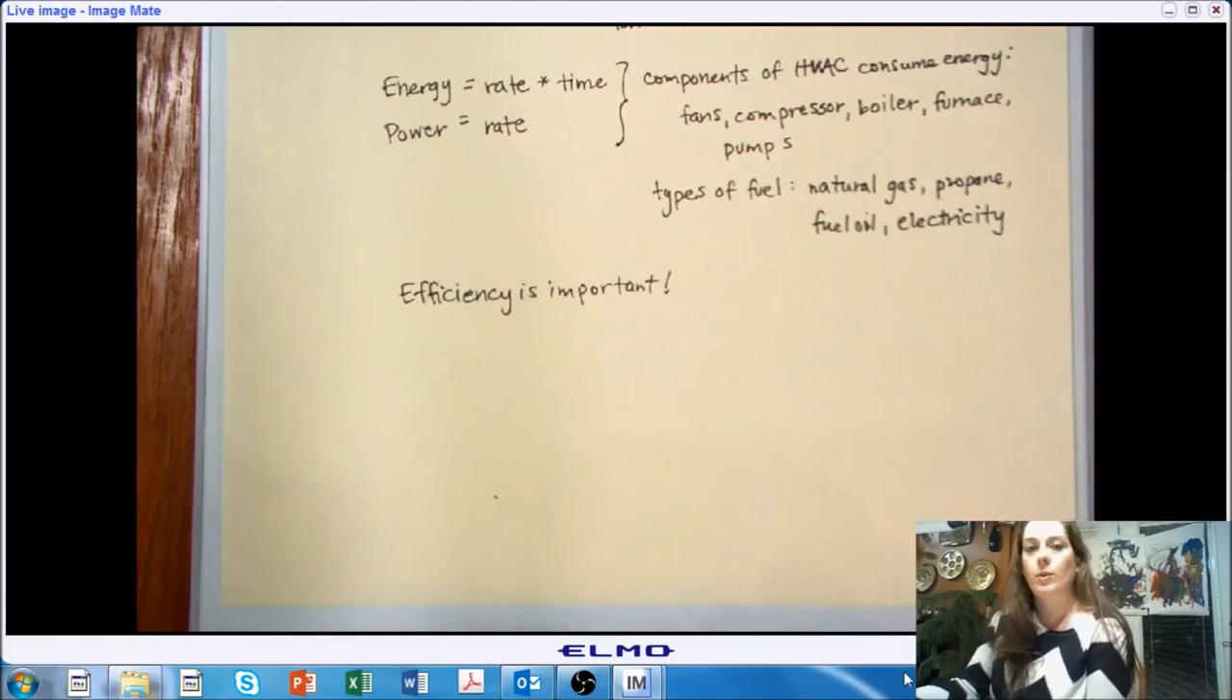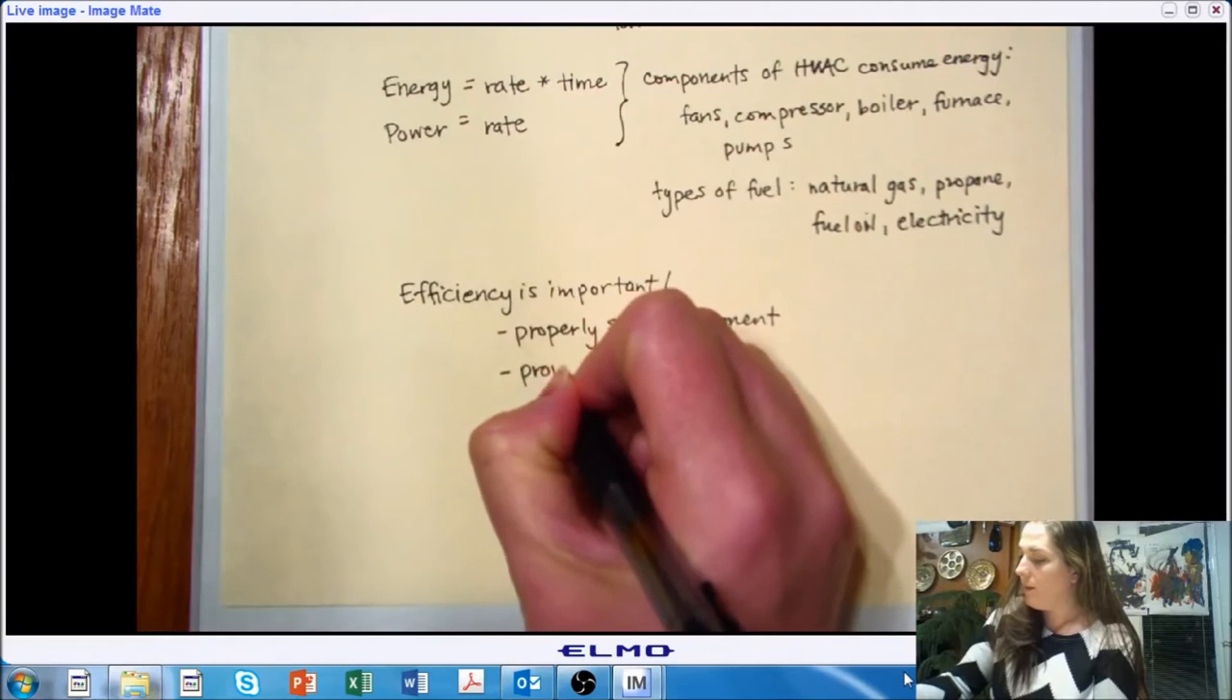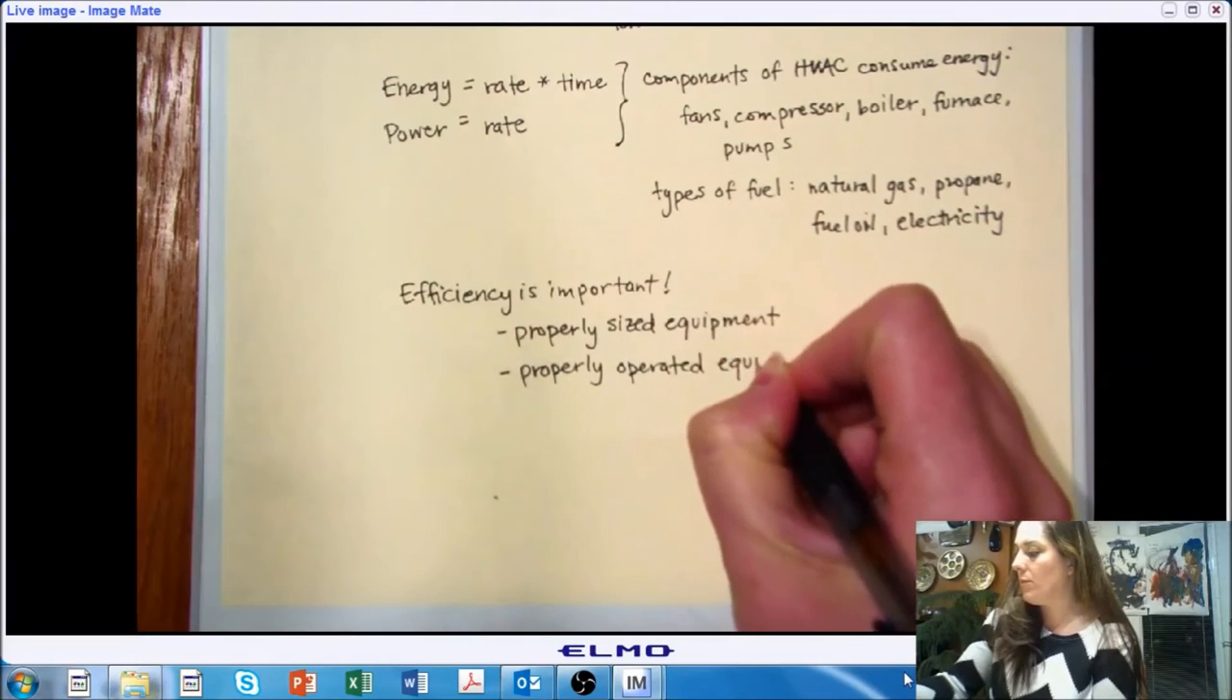So as we're discussing this, what I really want to get to is the idea that efficiency is important. So when we're thinking about efficiency being important, there are a number of places where we need to think about the efficiency of our system. So one, we should be thinking about properly sized equipment so that we're operating in ideal areas of our efficiency curve for our equipment. And not only the size of the equipment, but the operation of the equipment. So properly operated equipment. This has to do with both being designed and also the ability of the operator to understand how it is supposed to work so that they can operate it properly.